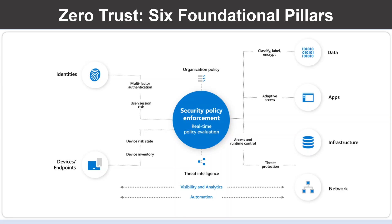This topic is very important for you to understand. In the Zero Trust model, all elements work together to provide end-to-end security. These six elements are the foundational pillars of the Zero Trust model, which includes identities, devices and endpoints, data, applications, infrastructure and your network.